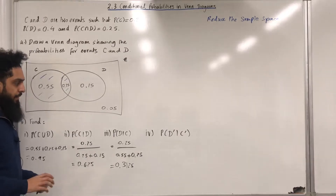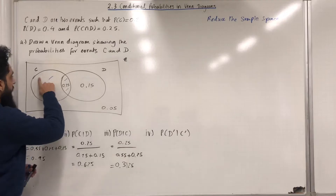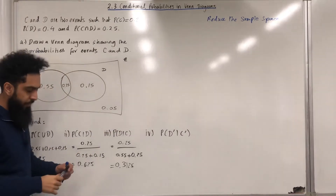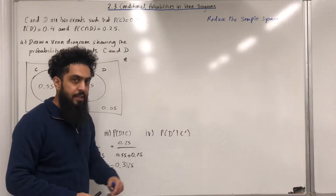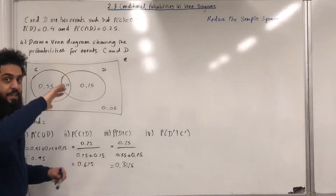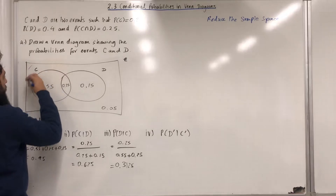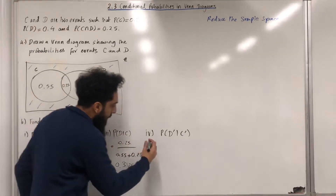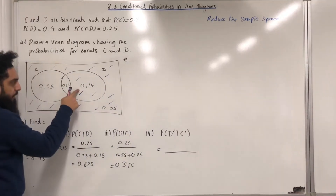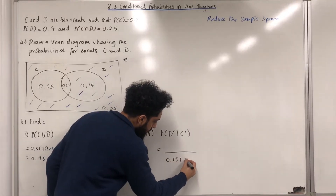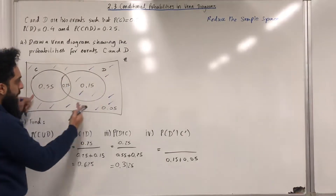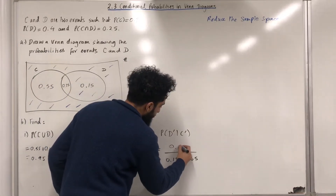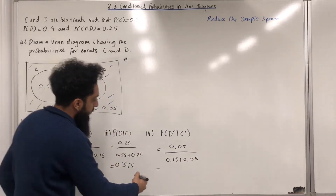Moving on to part 4. I'll delete the shading. Probability not D given that event not C takes place. Our sample space is reduced to everything outside of C. The probability will be out of 0.15 plus 0.05. From not C, the part that represents not D is 0.05, so 0.05 in the numerator. Calculating this gives 0.25.